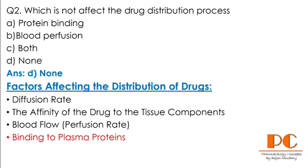The right answer is D — none. Basically, all of these affect drug distribution. Both protein binding and blood perfusion affect the drug distribution process. The factors affecting drug distribution are: diffusion rate of a drug, affinity of the drug to the tissue or protein compartment, blood flow (perfusion rate), and binding to plasma proteins.